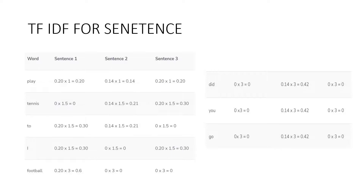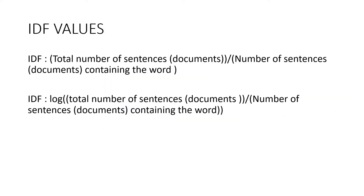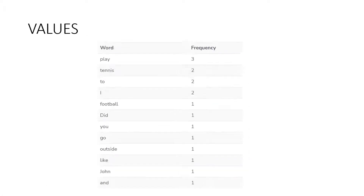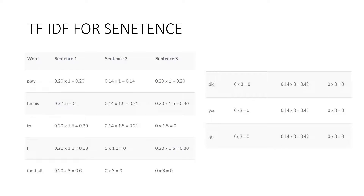It is important to mention that to mitigate the effect of very rare and very common words on the corpus, the log of the IDF values can be calculated before multiplying it with the TF value. In such a case, the formula for IDF will be: IDF equals log of total number of sentences (i.e., documents) divided by number of sentences containing the word. Since we had only three sentences in the corpus, for the sake of simplicity, we did not use the log. In the implementation section, we will use the log function to calculate the final TF-IDF values.